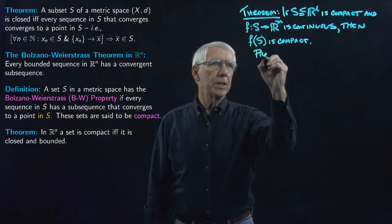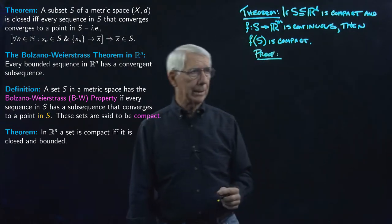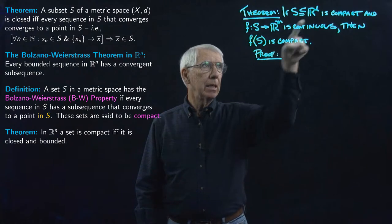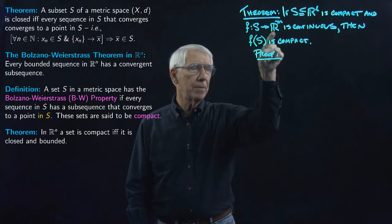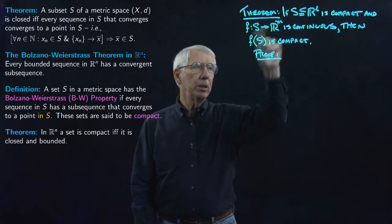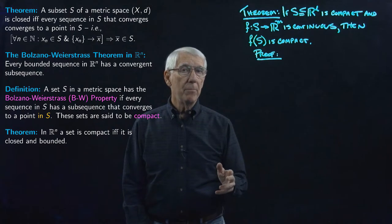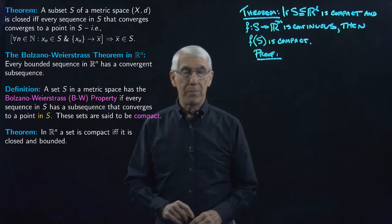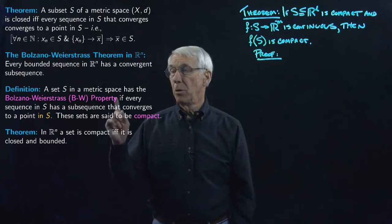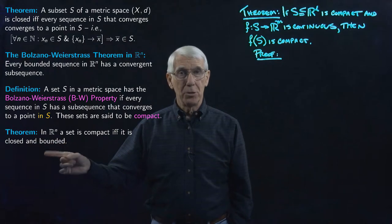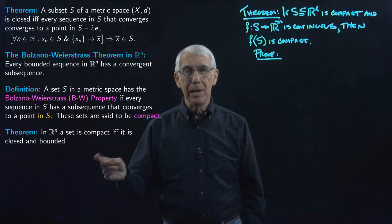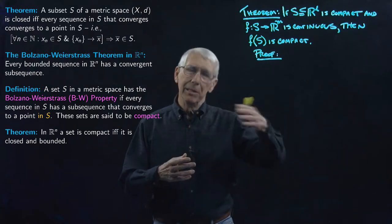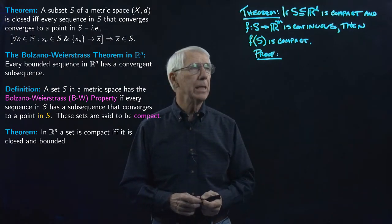Let's see if we can prove this. We want to prove that F(S), a subset of the target space R^M, is compact. Since we're in Euclidean spaces, that's the same as being closed and bounded. It's going to turn out to be easier to prove this using the Bolzano-Weierstrass property of the set than using the closed and bounded characterization directly.